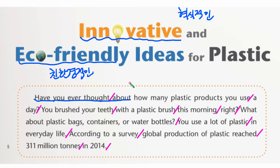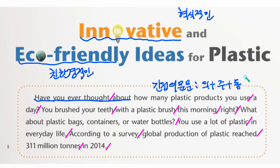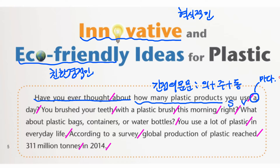'Have you ever thought about?' 다음 부분은 간접의문문입니다. 간접의문문에서는 어순을 조심해야 되는데, 의문사-주어-동사 순서입니다. 우리가 줄여서 '의주동'의 순서라고 이야기합니다. 여기서는 'How many plastic products'까지를 의문사 덩어리로 보고, 'you'가 주어, 그 다음에 동사가 됩니다. 또한 'a day'는 단순히 하루가 아니라 '하루마다'라는 의미를 갖고 있습니다.